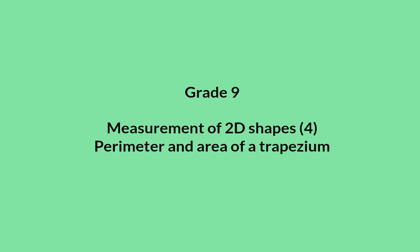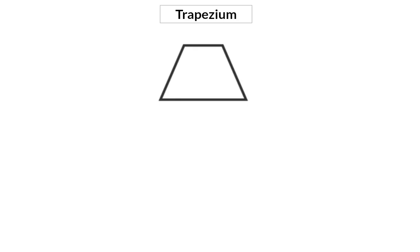In this video, we're going to have a look at the perimeter and area of a trapezium. A trapezium is a quadrilateral with one pair of opposite sides parallel.